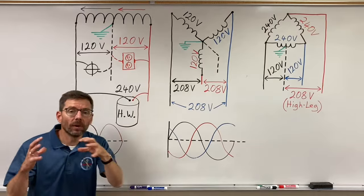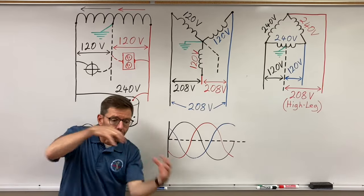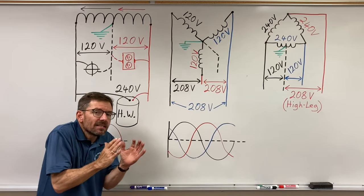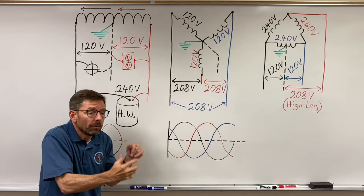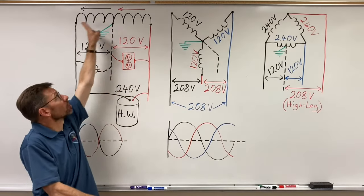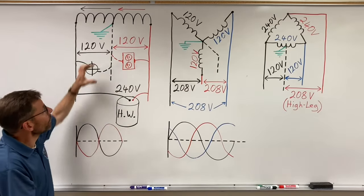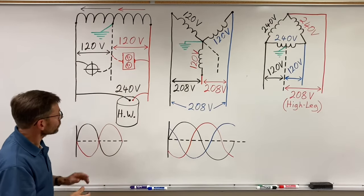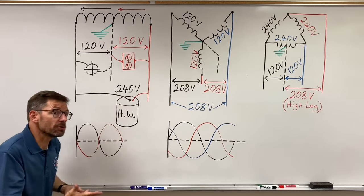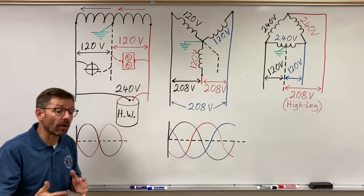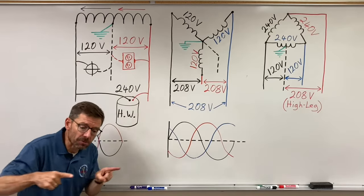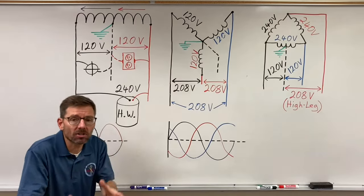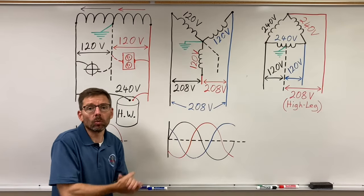At any given moment in time, AC voltages go back and forward, back and forward. We catch it at one moment and see what it's doing. We also have some loads that work on both 120 and 240 — a range or a dryer often takes both hots and a neutral. Some parts of those appliances work on 240, some parts on 120.